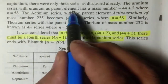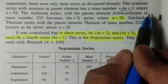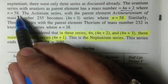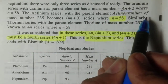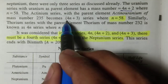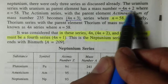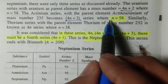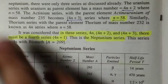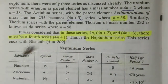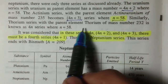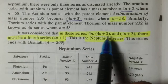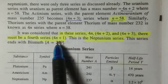The uranium series with uranium as parent element has a mass number equal to 4n plus 2, where n is 58. So 4 times 58 plus 2 equals 234. The actinium series with parent element actino-uranium of mass number 235 is the 4n plus 3 series, where n is 58. The thorium series with thorium of mass number 232 is known as the 4n series, where n equals 52. It was considered that since there are series 4n, 4n plus 2, and 4n plus 3, there must be a fourth series, which is the neptunian series.